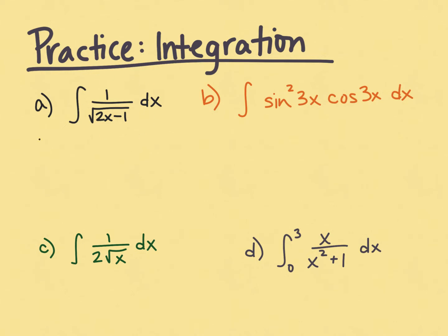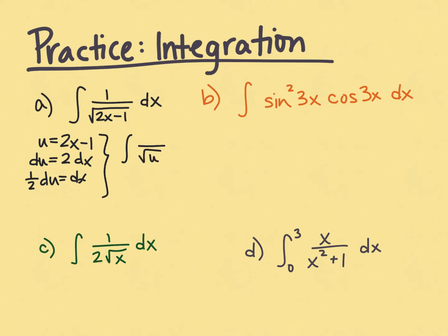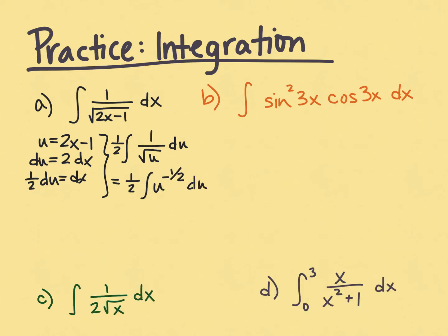Let's try part a with a u substitution. Let u equal 2x minus 1, so du equals 2 dx. I only have 1 dx, so dividing both sides by 2 gives one half du equals dx. Replacing the denominator with the square root of u and dx with one half du, the one half goes out front. Now we have one half the integral of u to the negative one half du — a simple power rule for integration.